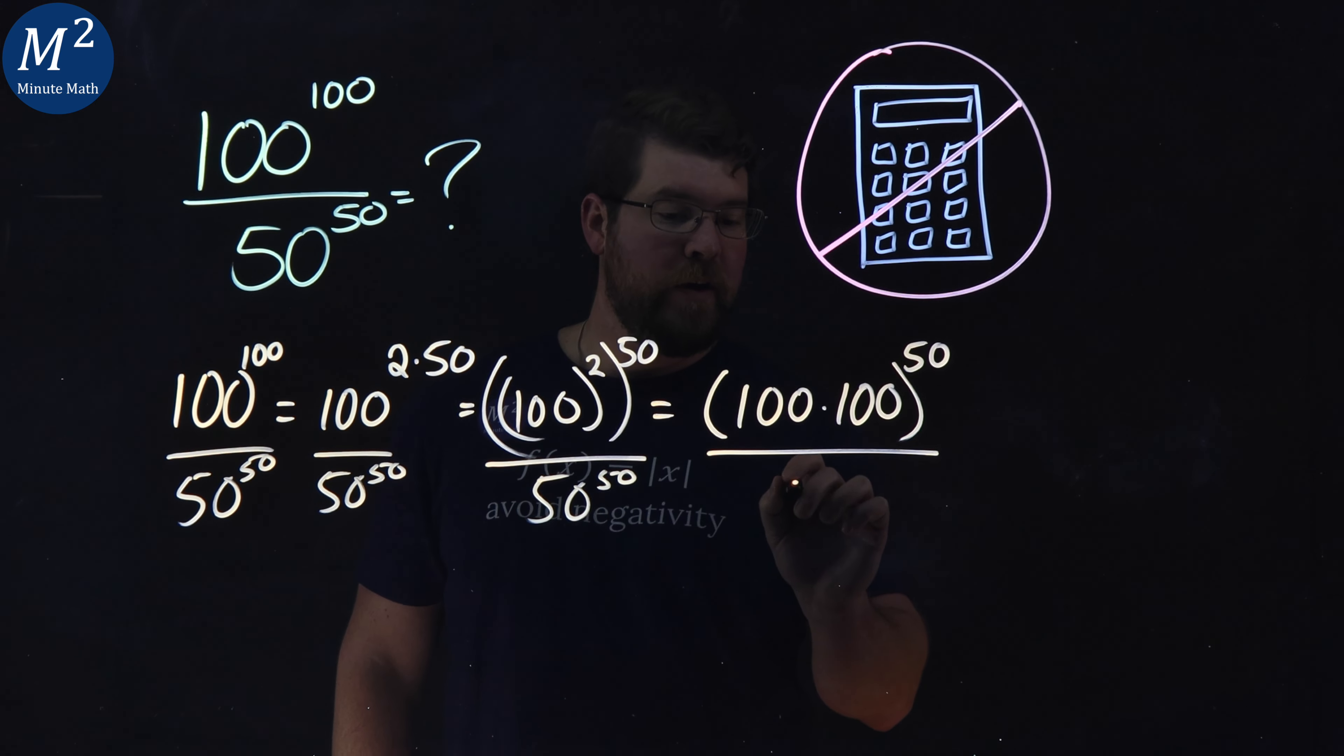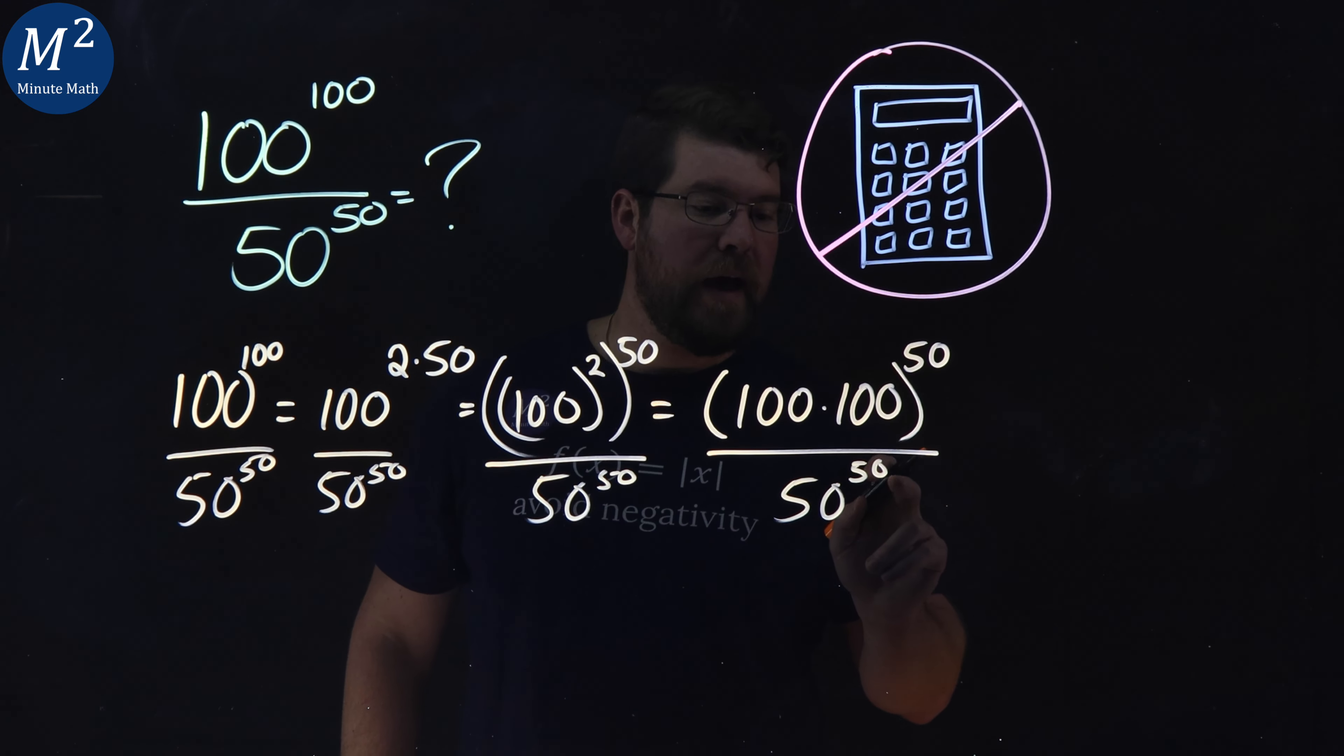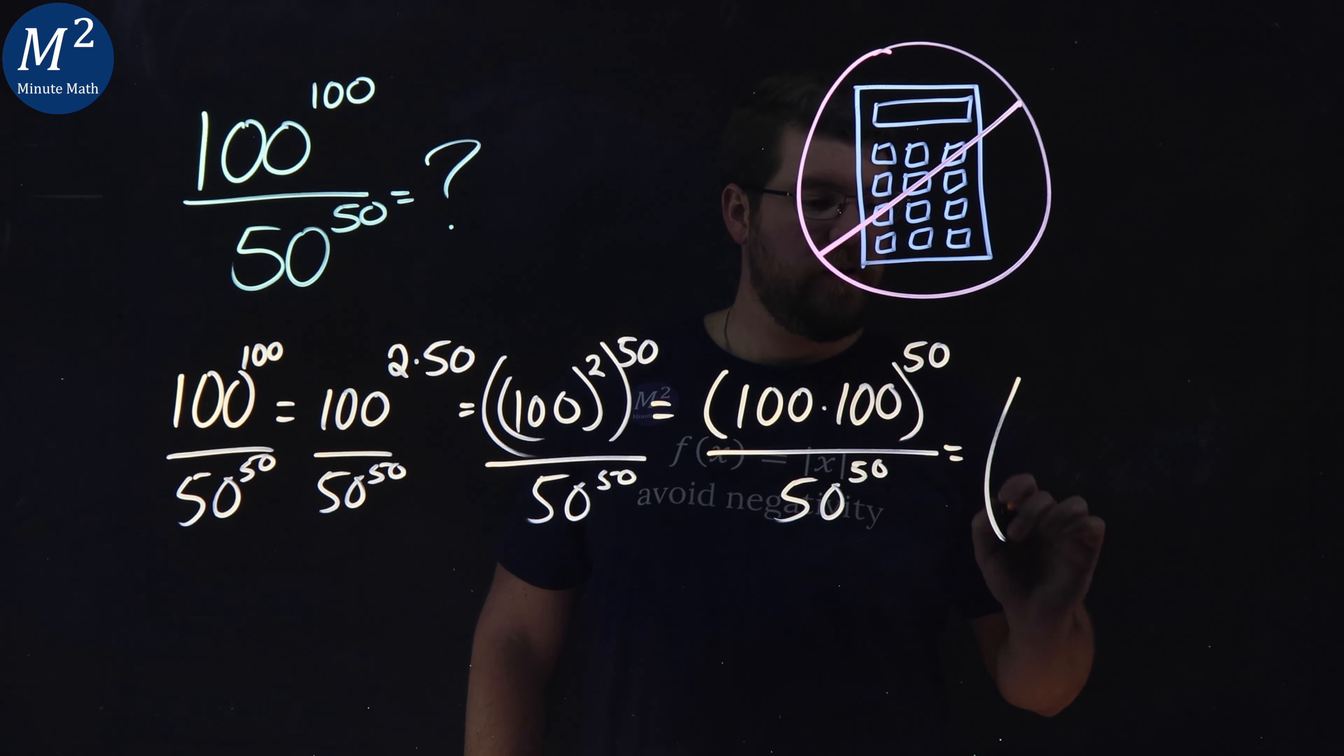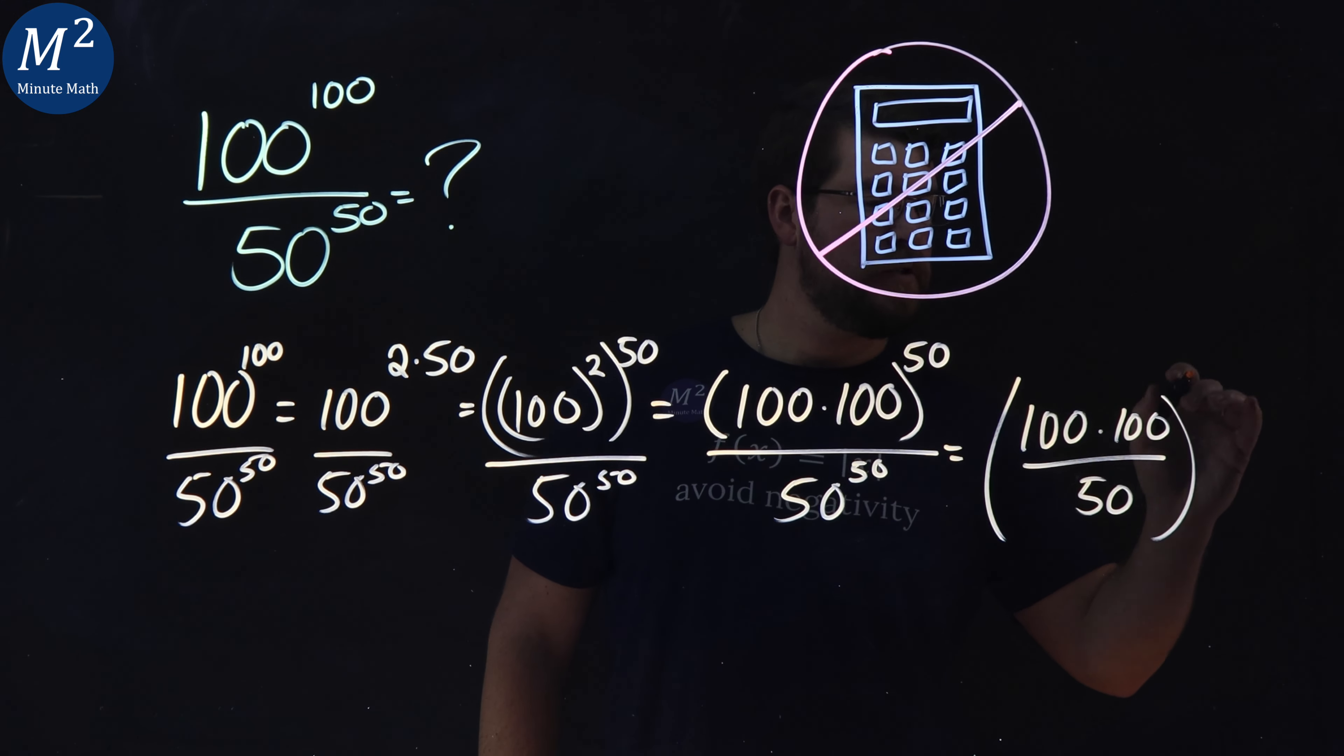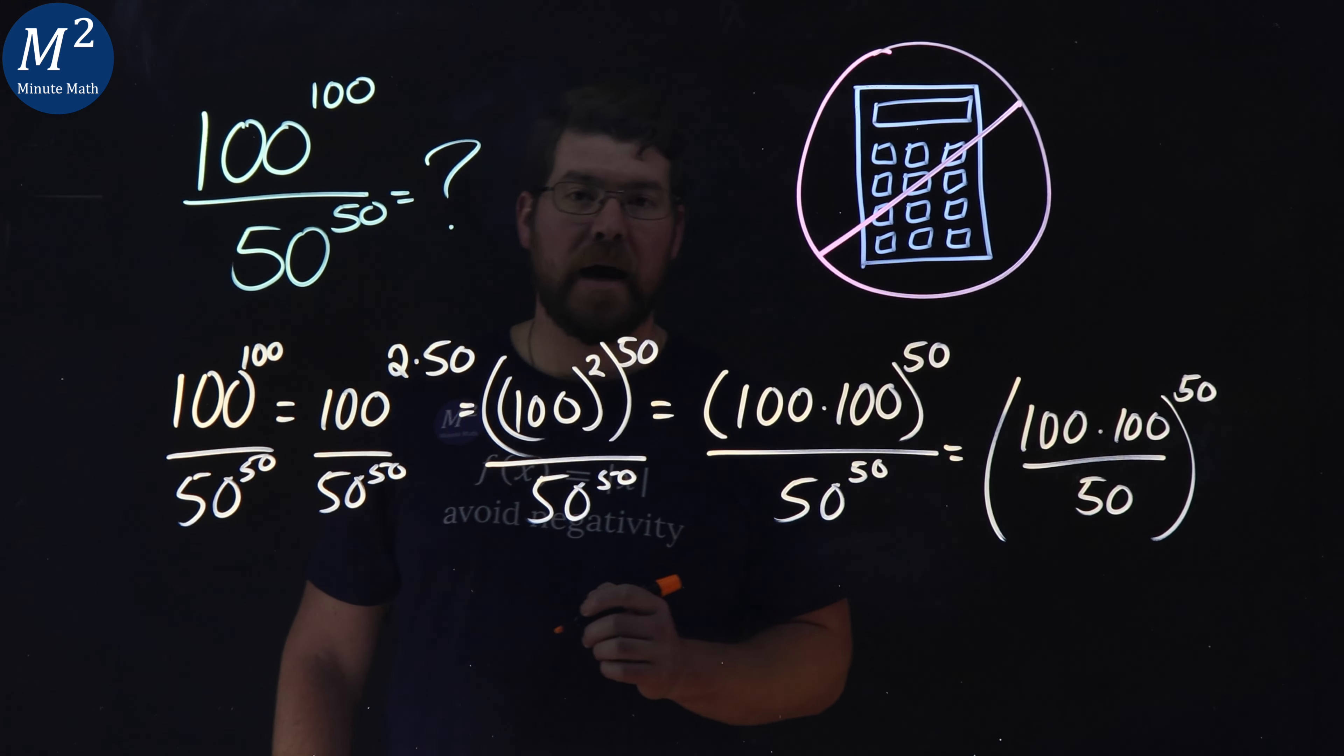50 to the 50th power. But now we have the same exponent going on. So, we can rewrite this to be 100 times 100 over 50 to the 50th power.